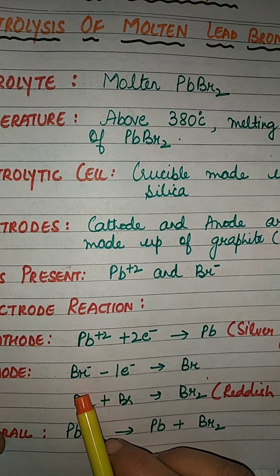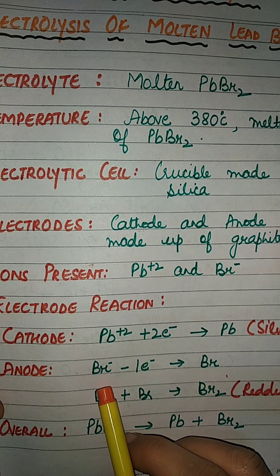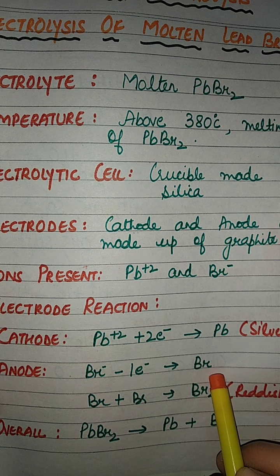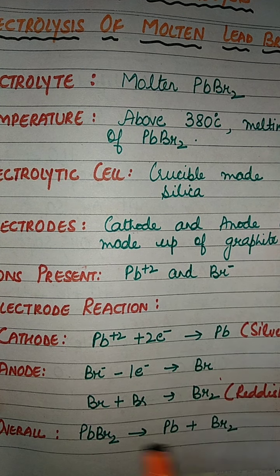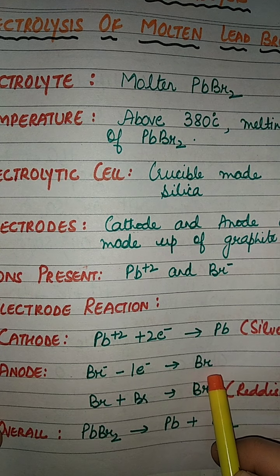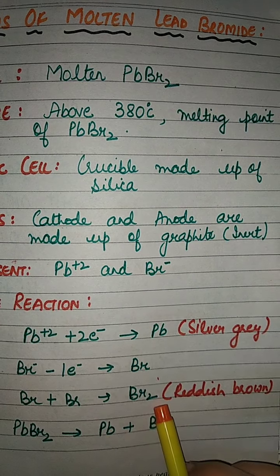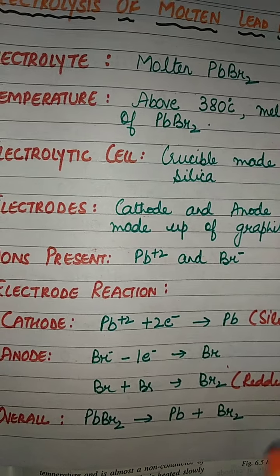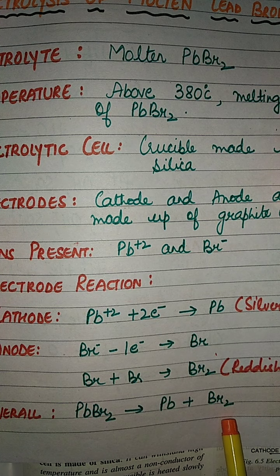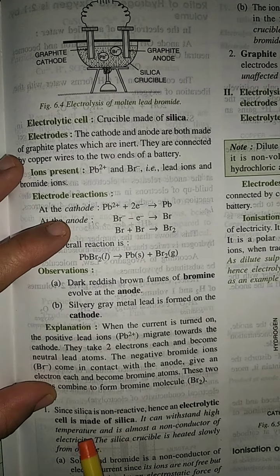Br⁻ is an anion. Being negatively charged, it moves towards the anode where discharge of the anion takes place. Discharge means the negatively charged ion is converted into a neutral atom or a gas. Br⁻ loses one electron and changes into Br. Br being unstable, two atoms of Br combine and form a reddish brown gas — that is bromine. The overall reaction: PbBr₂ gives us Pb + Br₂.